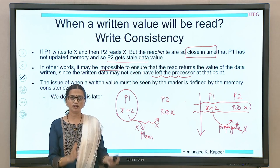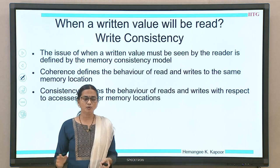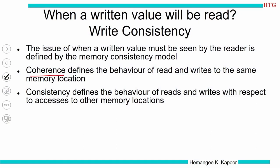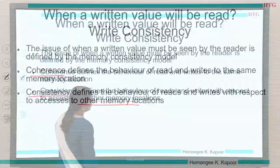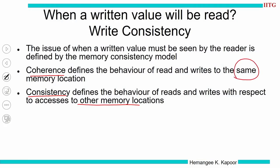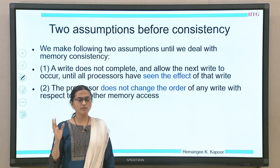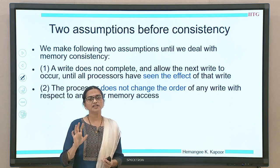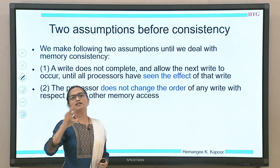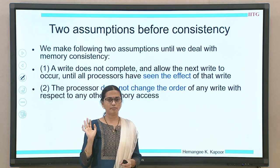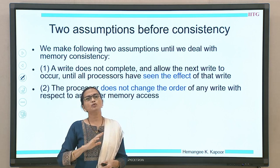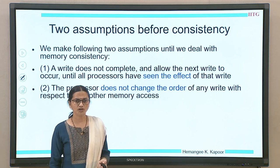This topic of consistency we will deal with later after we have finished all the coherence-related topics. For now, until we cover consistency, we need to have some assumptions on the system. Coherence defines the behavior with respect to the same memory location, and consistency defines the behavior of reads and writes across other memory locations also — the same memory location is an important term for coherence. Before we deal with consistency, we have to make some assumptions so that our coherence mechanism is well established and remains formal. We are going to make two assumptions. The first assumption is that when a process does a write, until every other process has seen this write, it does not perform any other operation.